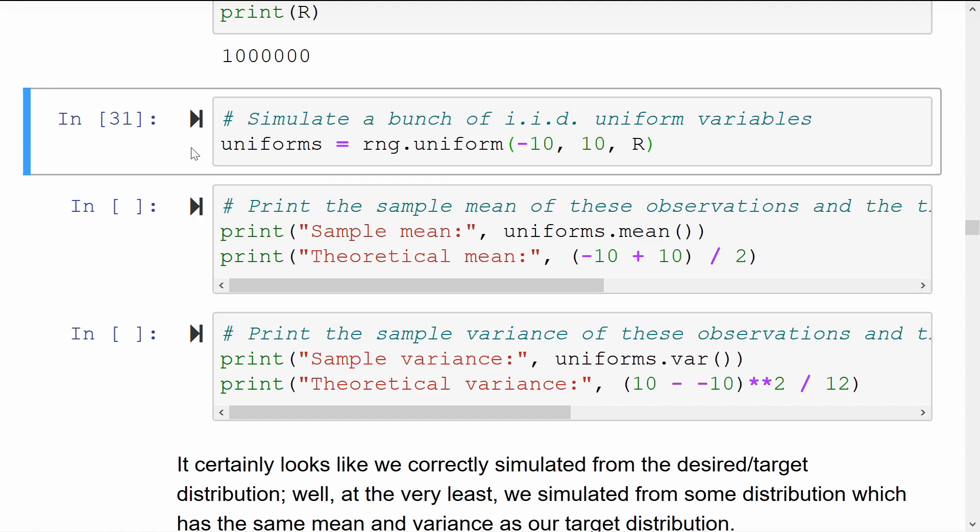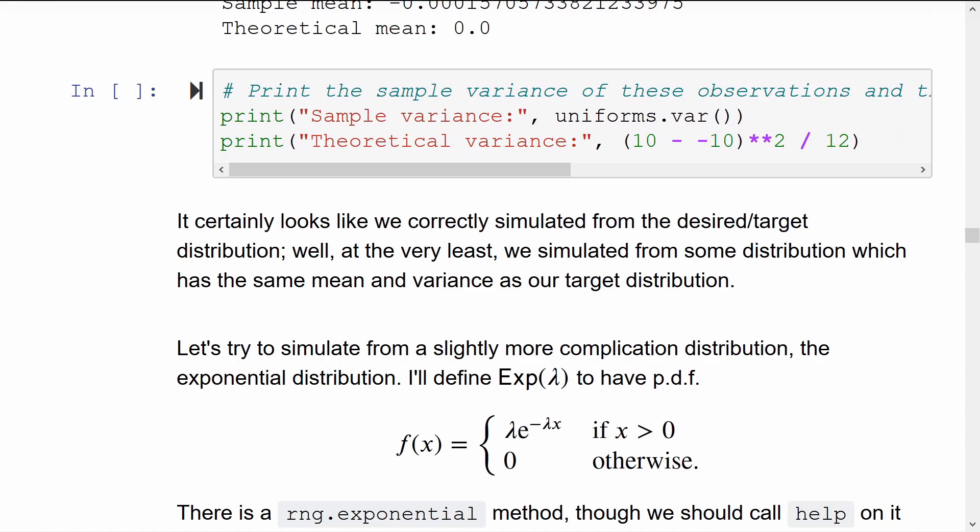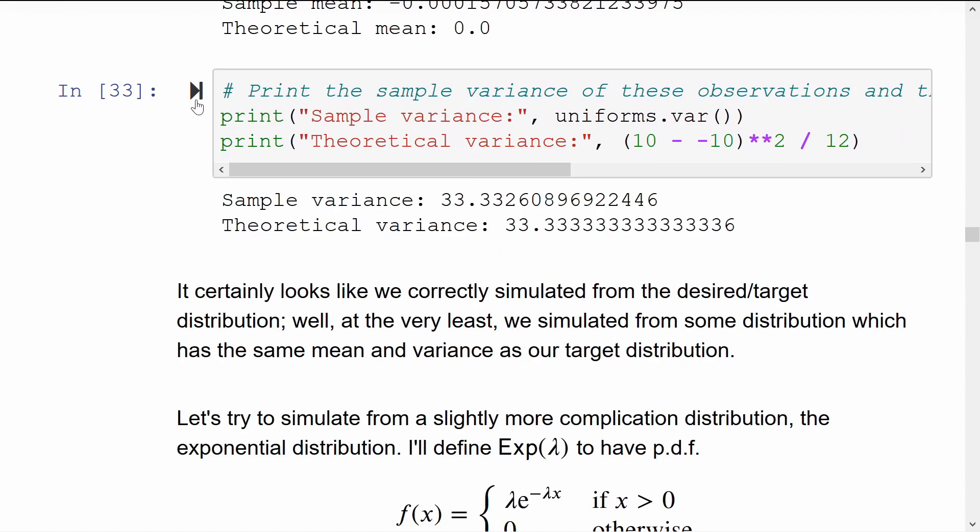What I normally do is check that I sampled from the distribution that I was hoping for. I take the sample mean and compare it to the theoretical mean for the distribution. So uniforms between minus 10 and positive 10 will have a mean of 0. And our sample mean is 0.0001. That's 0 by my books. We can do the same thing for the variances. Sample variance 33.33 and theoretical variance 33 and a third. We hit the nail on the head here.